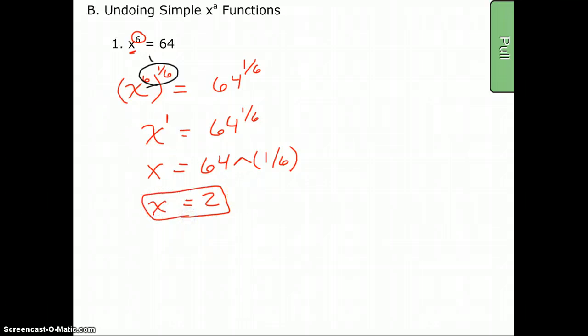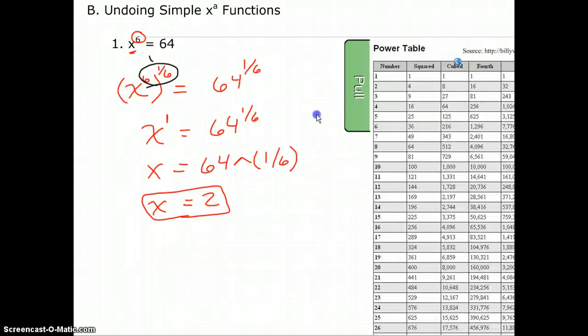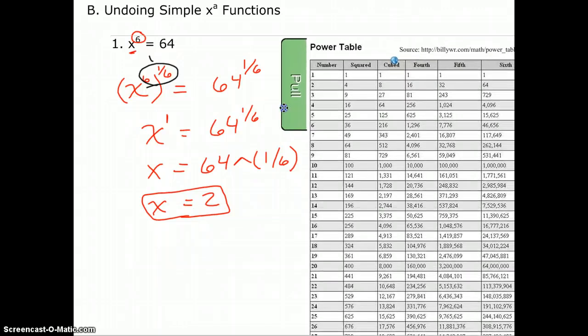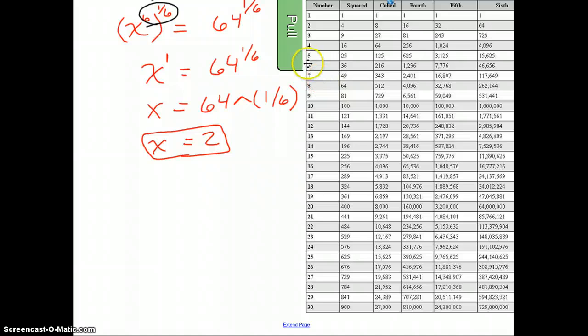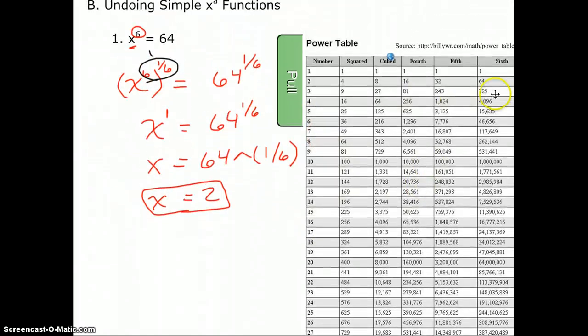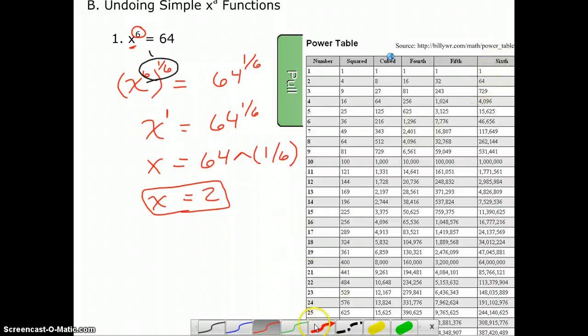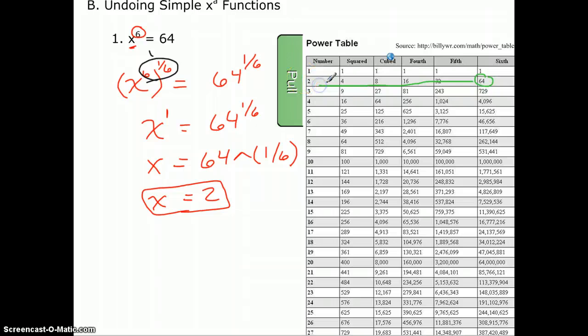So let's take a look quickly at a power table. This one's a little different than the one you had. But we're looking for sixths. And so if you look at this sixth column, you see sixty-four, right here. So that's the sixth power, and literally we just need to come back over, and there's our answer. So that can be useful for you.